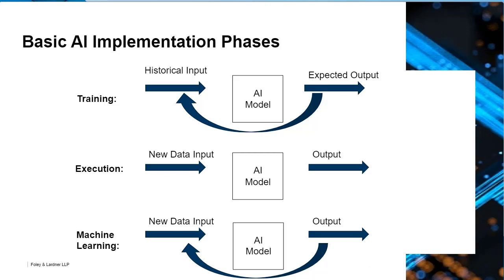Then another phase is execution — we actually use the model. A new picture comes in of an animal, and the AI model takes that picture and outputs whether it thinks it's a dog or a cat. That's the execution phase. The final phase, which is optional — not every AI system has machine learning — is where machine learning takes the new data input, determines whether it's a cat or a dog, and then learns from that. For example, it might say this one should have been a cat, let's tweak our approach. Or, this is a hairless dog — let's figure out how to adjust our model to account for this type of situation. So we have these different phases of executing an AI model.